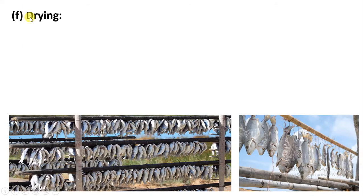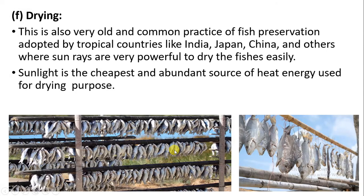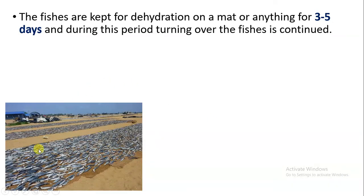The next method is drying. The drying method is also a very old and common practice of fish preservation, seen in many countries like India, China, and Japan. In regions where sunlight intensity is high, drying type preservation is more commonly seen. Sunlight is the cheapest and most abundant source of energy, so it is used for preserving fishes. Small fishes are dried and stored. The fishes are kept for dehydration on a mat or surface for about 3 to 5 days continuously.